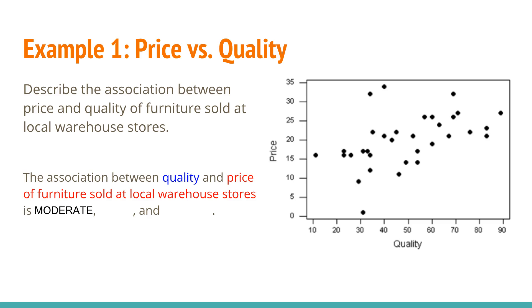Strength: moderate. Type: this is clearly linear — it's not curved. And it is positive; it's going up in a general positive direction. Period. Stop. Don't add more stuff to it — that is all you have to discuss. Now, if there is a strange outlier somewhere, we might want to mention it, but in general this is going to get you where you want to be. If you're in an AP class, it's going to get you the full AP credit. Keep it simple.